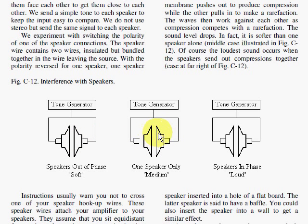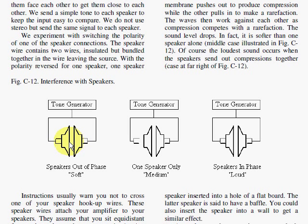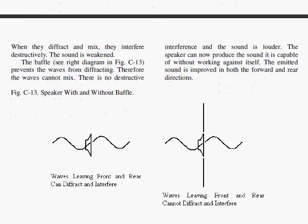This diagram refers to an experiment we did in class where we crossed the wires on one of a pair of speakers. With one speaker alone, you get a medium volume. With both speakers wired correctly they work together and sound loudest. But if you cross the wires so they work against each other, the sound is even softer than one speaker alone — they cancel each other out. As I said, don't do me any favors if you're going to work against me; I'd rather do it by myself.